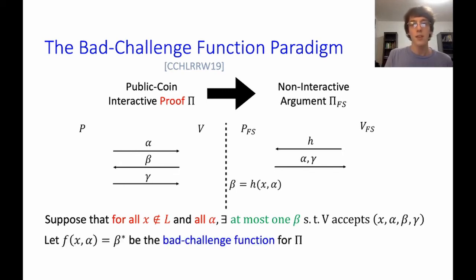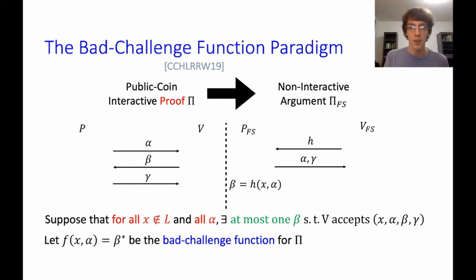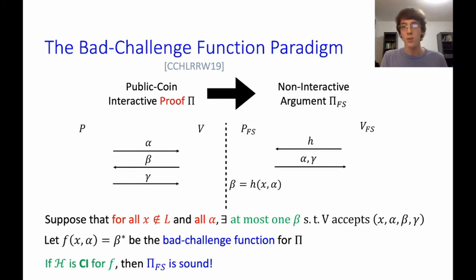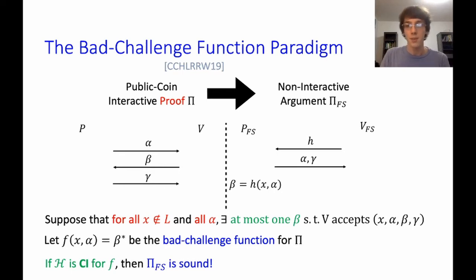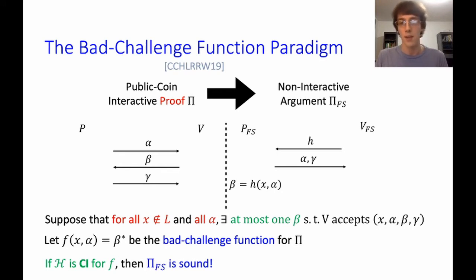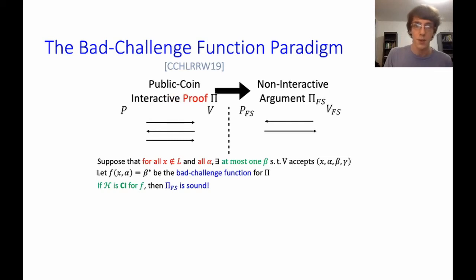For three-message protocols with a strong soundness property — for every false statement and every first message alpha, there is at most one challenge beta such that any third message gamma would make the verifier accept — correlation intractability for functions is enough to compile the protocol. We define a function f mapping (x, alpha) to that one bad challenge, and if the hash family is CI for f, the non-interactive protocol is sound. If the prover produces an accepting transcript, the hash value beta must equal f(x, alpha), contradicting CI.